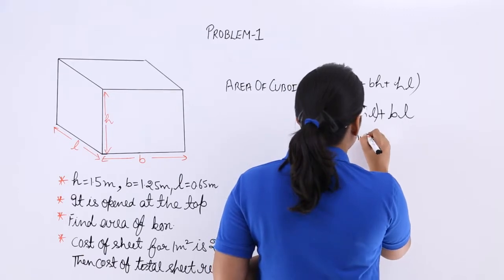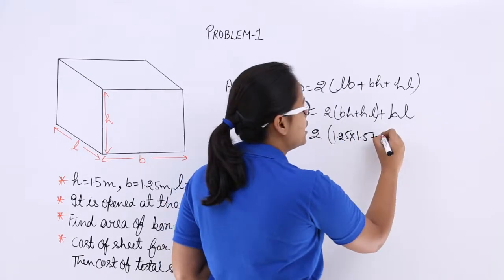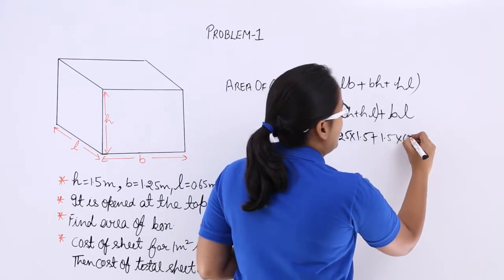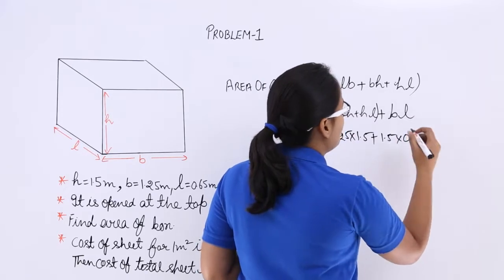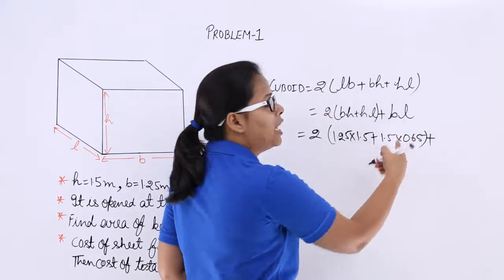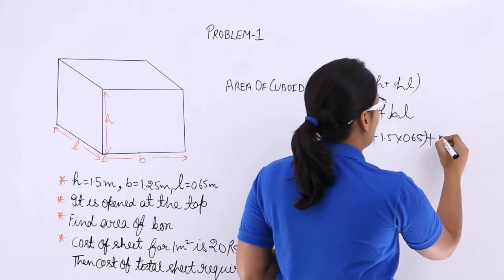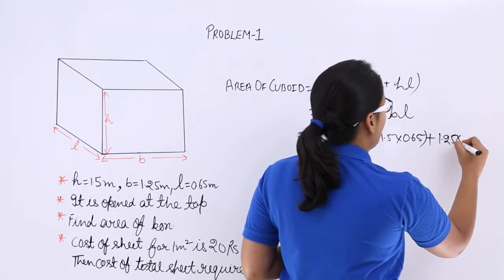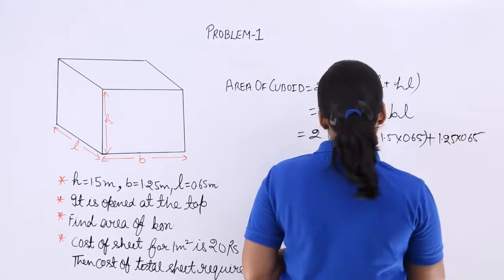1.25, H is 1.5, H again is 1.5, L is 0.65, plus B into L, value for B is 1.25 and value for L is 0.65.